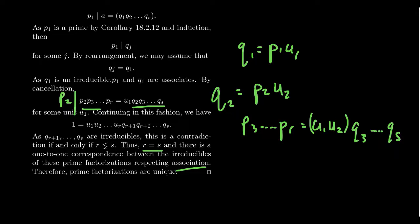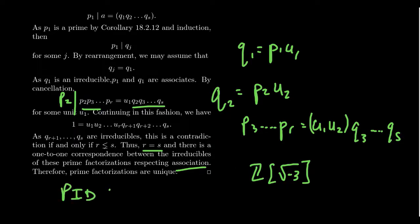To summarize: every Noetherian domain has irreducible factorizations, but without the principal ideal assumption, a Noetherian domain need not be a UFD — there exist counterexamples. Our favorite example is Z adjoined the square root of negative 3, which is a Noetherian domain but not a UFD. So in a Noetherian domain, irreducible factorizations exist but aren't necessarily unique. In a PID, those factorizations are unique, making it a UFD. Every PID is a UFD, so the class of PIDs sits properly inside the class of UFDs — but there exist UFDs that are not PIDs.